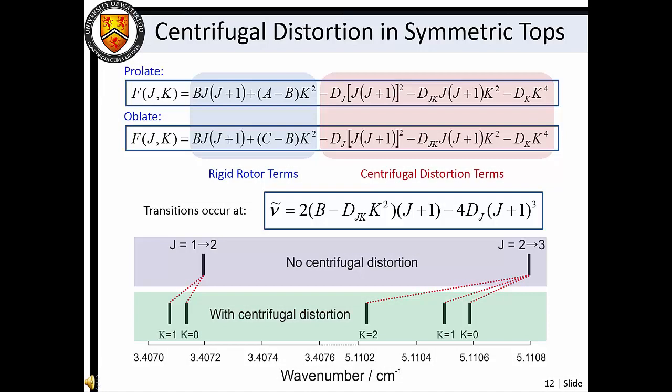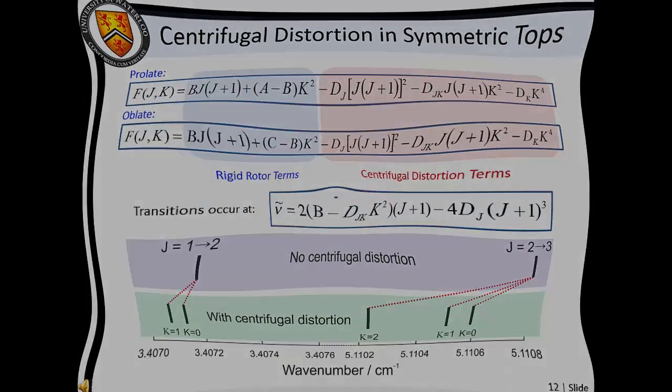By accounting for the effects of centrifugal distortion, we find that there is now a K-dependent term in our expression for calculating transition wave number. Thus, we see that there are distinct spectral lines associated with different values of K for a particular ΔJ=±1 rotational transition.